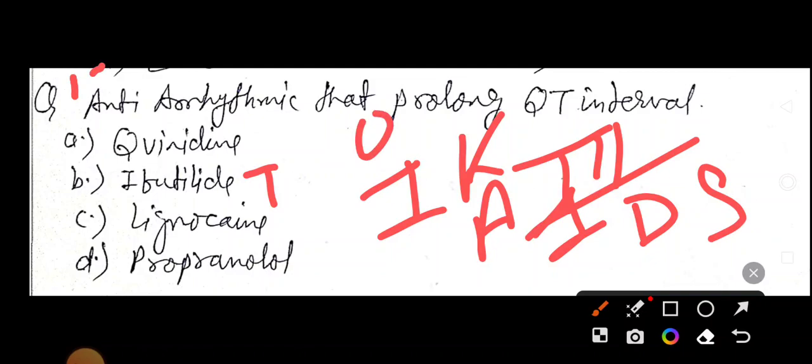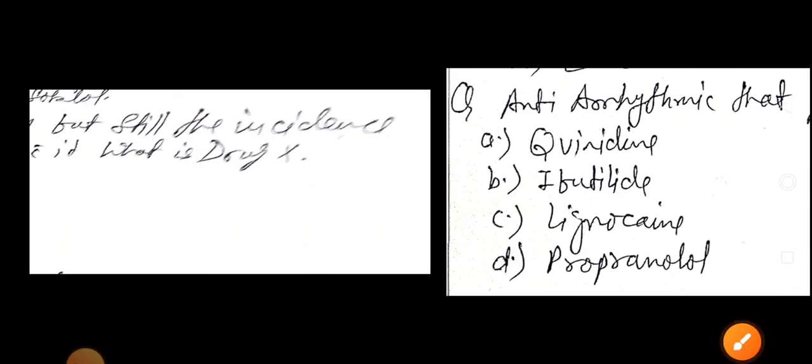Now, one A drug like quinidine, disopyramid. So A and B. Two options are right. Disopyramid.